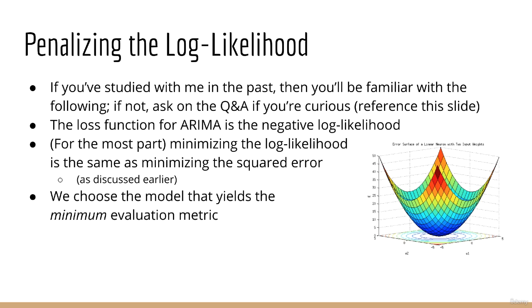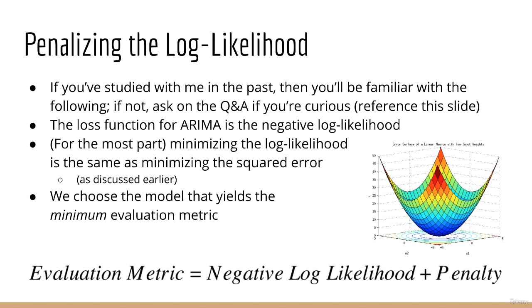Now, if we only look at the log likelihood, we might end up overfitting. So what we do is we add a penalty term to the negative log likelihood. The main difference between the AIC and the BIC is that this penalty term is computed differently.